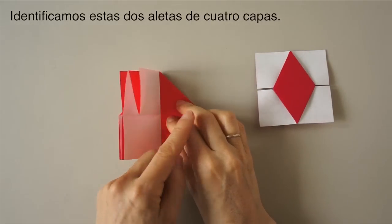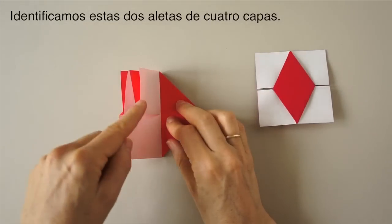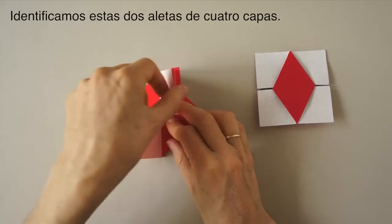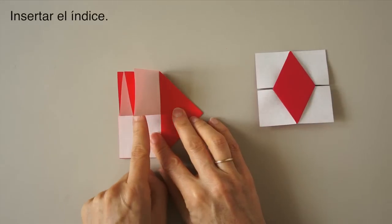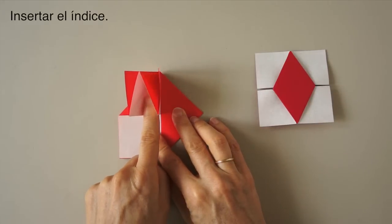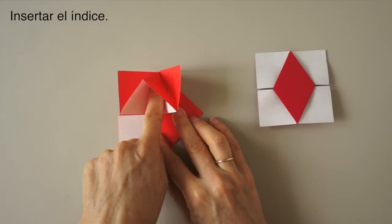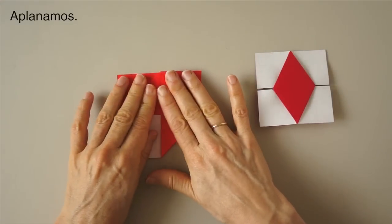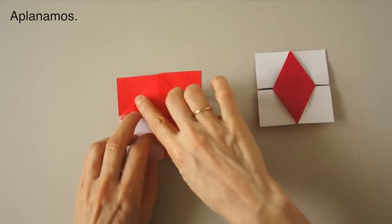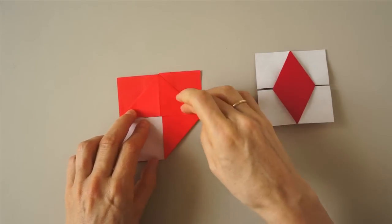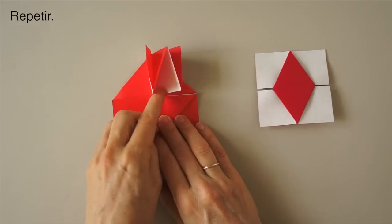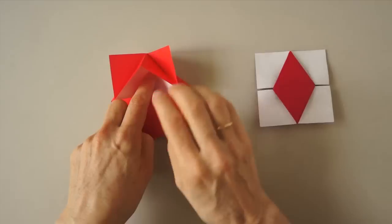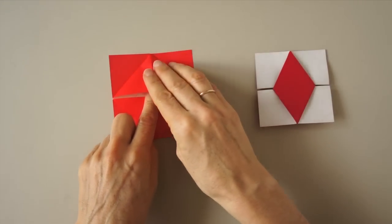We have these two flaps, like four-layer flap, and four-layer flap. We're going to insert our finger in the center of one of those flaps and collapse, squashing it. We do the same here. Squash the paper.